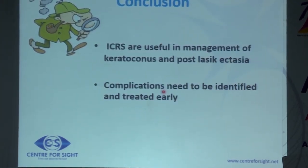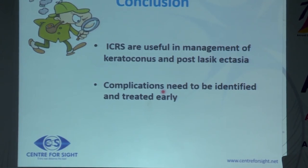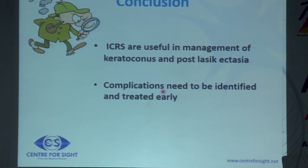In conclusion, intracorneal ring segments are very useful in the management of keratoconus and especially post-LASIK ectasia. Complications need to be identified and treated early, and these patients often achieve great visual rehabilitation along with reduced progression in cases of post-LASIK ectasia.